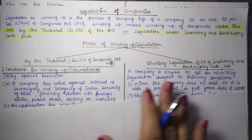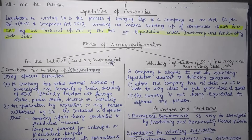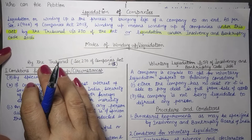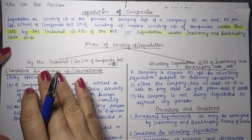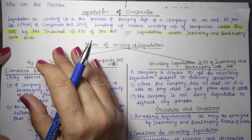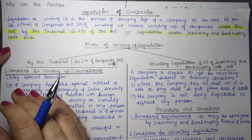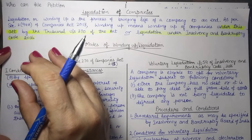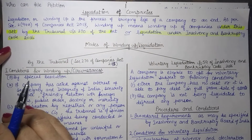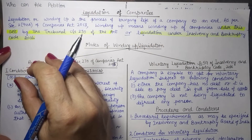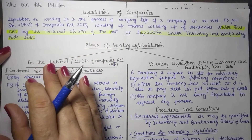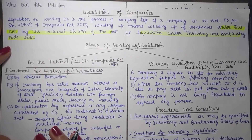Let us start with these two modes one by one in parallel so that we can understand the differences and the procedure involved. Starting with Mode 1 — winding up by the tribunal. When winding up is to be done by the tribunal, it means there is an authority giving an order for winding up, or a petition is raised to the tribunal for winding up of the company.